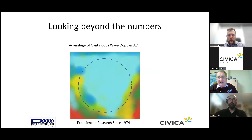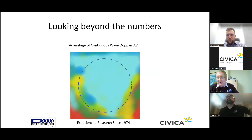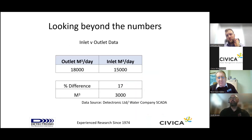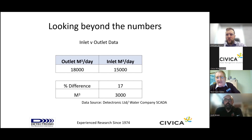The advantage of continuous wave Doppler is that it spreads out on an actual trajectory, sitting right in the middle of the velocity profile in the channel. On that particular site, we were getting 18,000 cubic metres coming out of the outlet but only 15,000 cubic metres per day coming into the inlet — which in itself revealed the errors in the hydraulic profiling. This was an effect of the Bernoulli principle, which was also creating pulsating flow and velocity spikes, where the velocity was increasing and decreasing in a pattern that was not consistent with pumped flow.